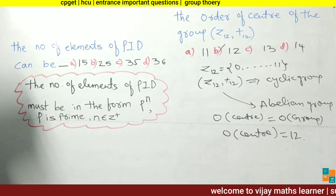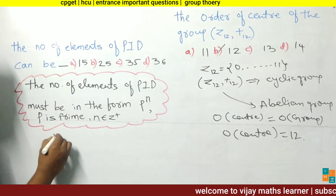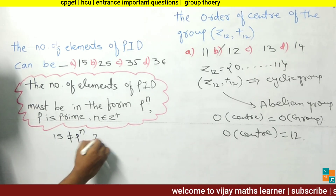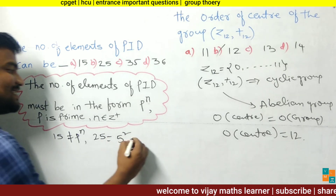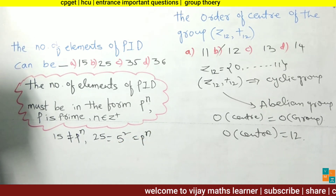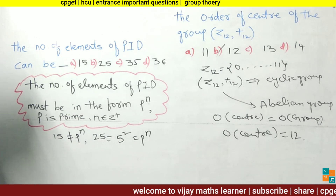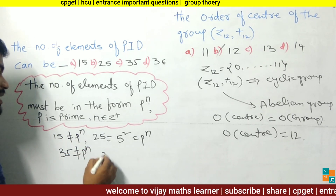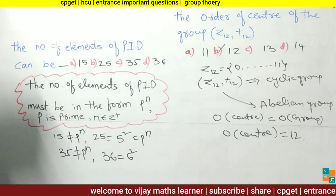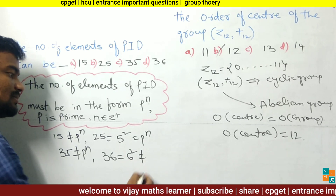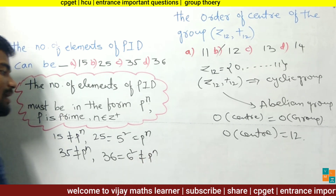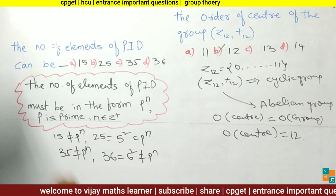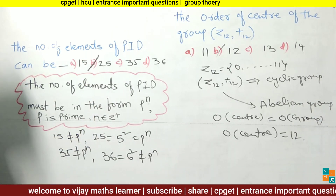Now 15 cannot be written in the form p^n. Next, 25 = 5², which is p^n with p=5 (prime) and n=2 (positive integer). 35 also cannot be written in the form p^n. And 36 = 6², but 6 is not prime, so it doesn't qualify either. Since 25 = 5² fits the form p^n, option B is the solution.